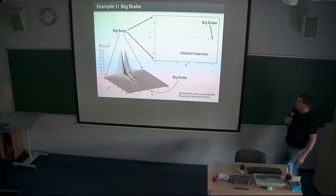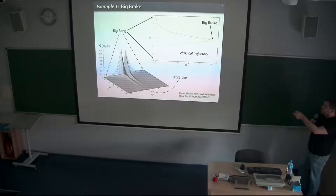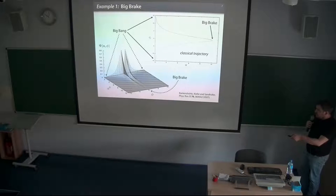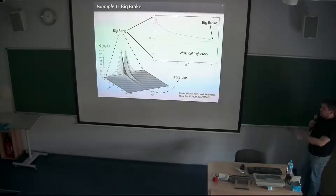In more detail: you have this classical trajectory which starts with a big bang and goes to a big rip, or the other way around, because as mentioned there is no time. In the quantum picture, you have the scale factor and scalar field spanning the mini-superspace, and you see that the wave function is zero both at the place where the big bang was, where the big rip was, and similarly at the other singularity.